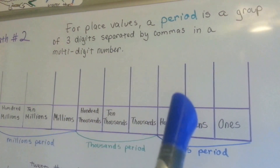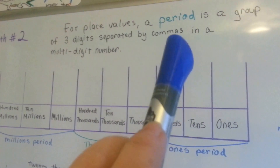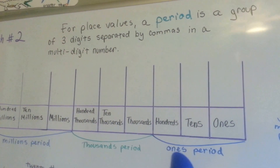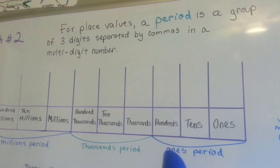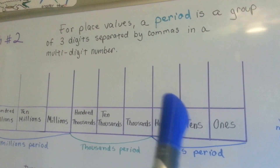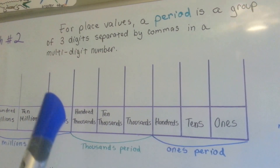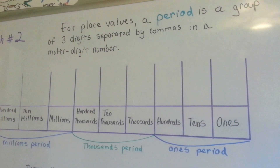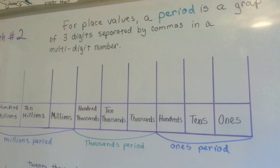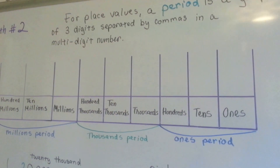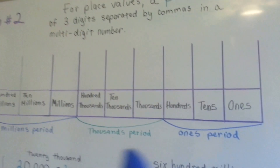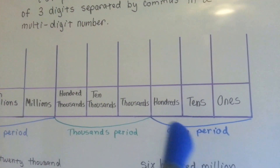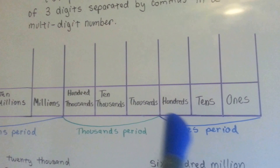For place values, a period — what you think is a little dot — is a group of three digits separated by commas in a multi-digit number. So this would be the ones period: ones, tens, and hundreds.